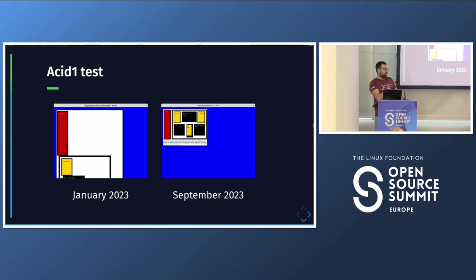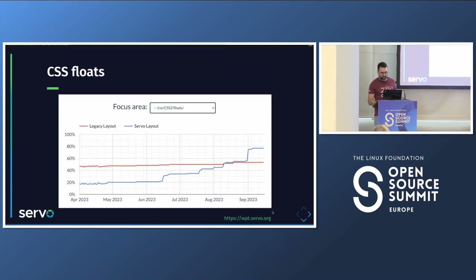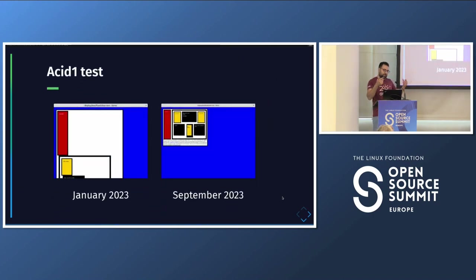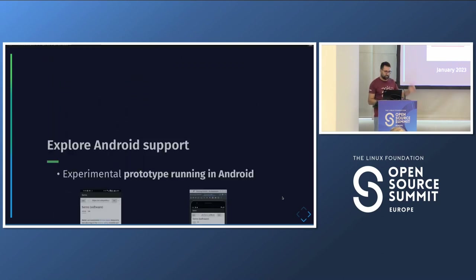ACID tests aren't the best tool to compare engines — WPT is better — but they're visually informative. You can visit WPT.Servo.org to check pass rate graphs for the whole CSS and WPT test suite. For ACID test 1, which is about floats, it was very broken in January and is now much better. ACID test 2 has many other features, so some things have improved but we're not there yet. It's not the immediate goal, but it's a nice way to show there has been progress.